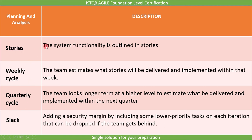Stories are the system functionality outlined in the form of a story. Weekly cycle means the team estimates what stories will be delivered and implemented within that week. Similar to the weekly cycle, the quarterly cycle has the team look longer term at a higher level to estimate what will be delivered and implemented within the next quarter. The last practice under planning and analysis is slack, which means adding a security margin by including some lower-priority tasks in each iteration that can be dropped if the team gets behind.